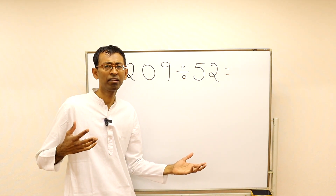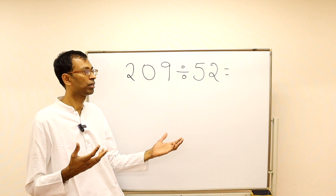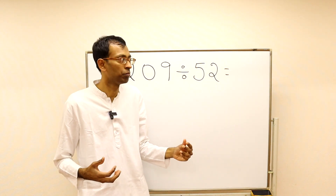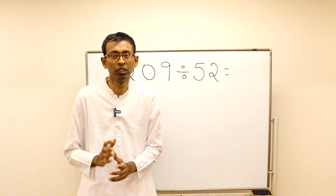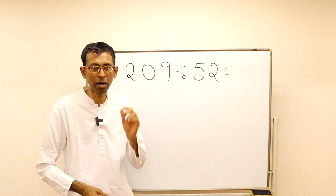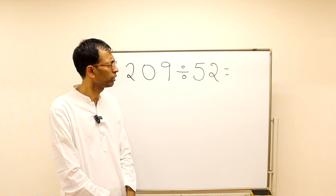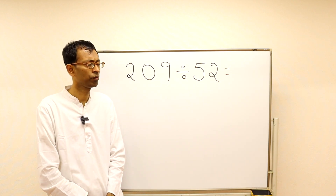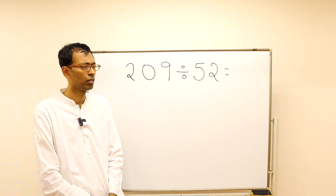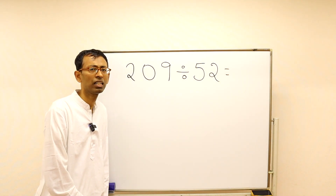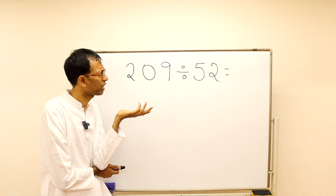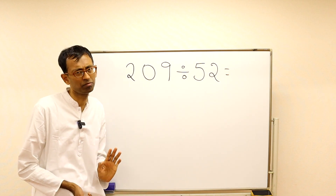Slowly open your eyes. Suppose you have a division problem like this: 209 divided by 52. The divisor is 52 — we never learned the multiplication table of 52, so how do we do this division? Pause the video and look at this problem; maybe your body will tell you the answer. Vedic maths is intuitive. What we have to do is simply find out how many 52s are there in 209.